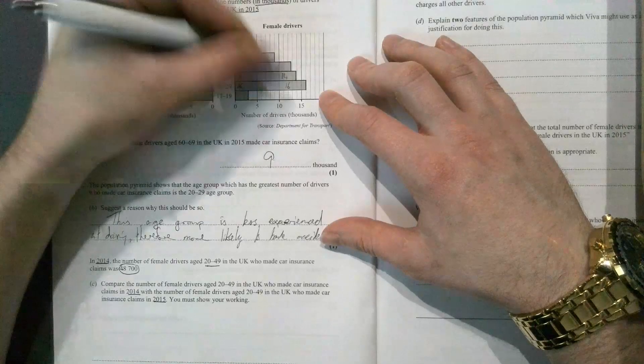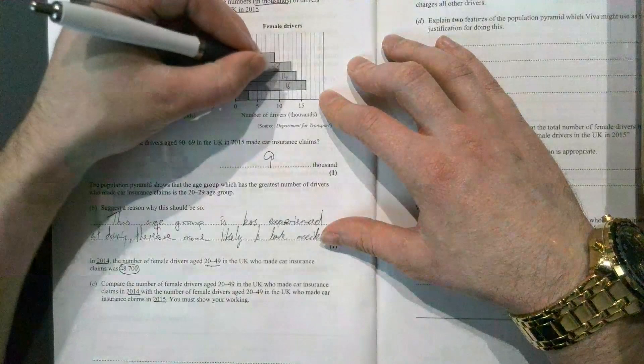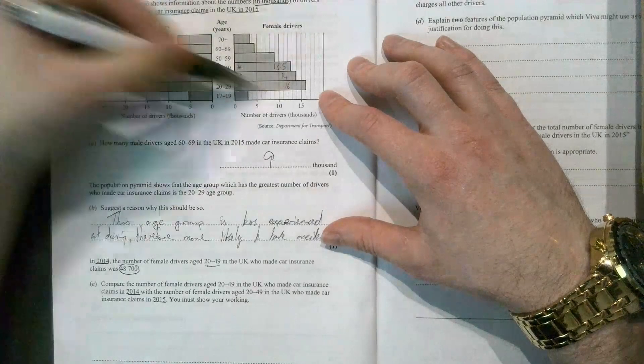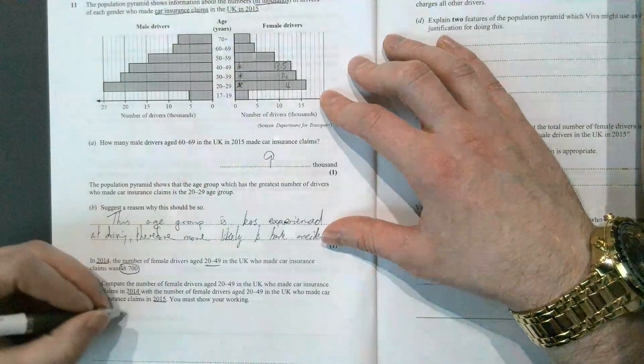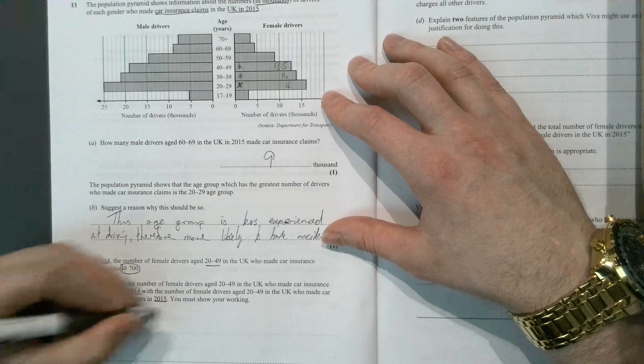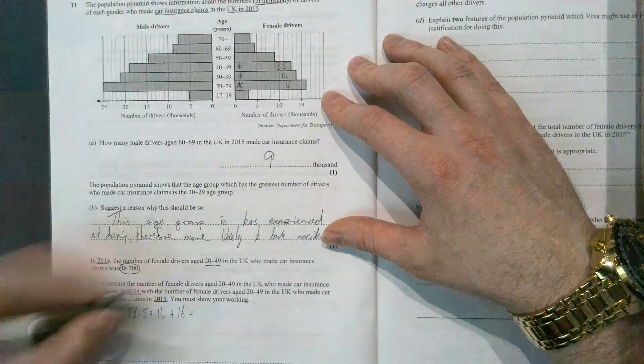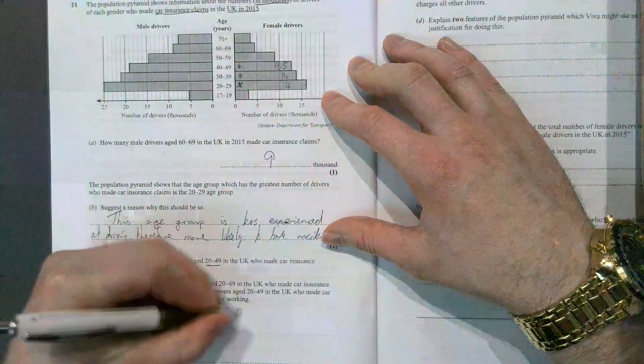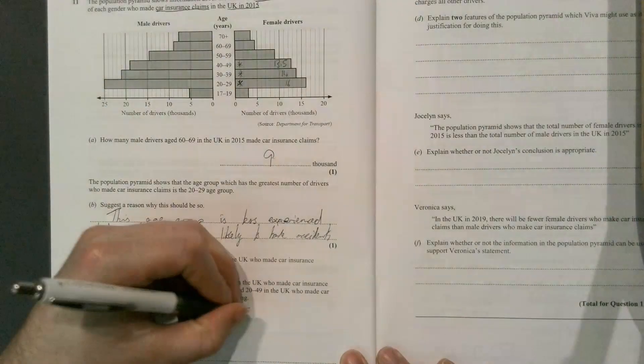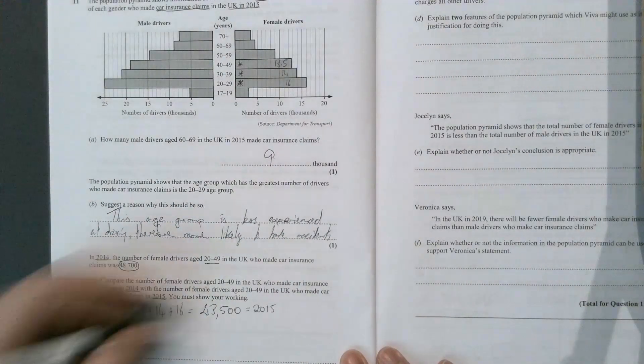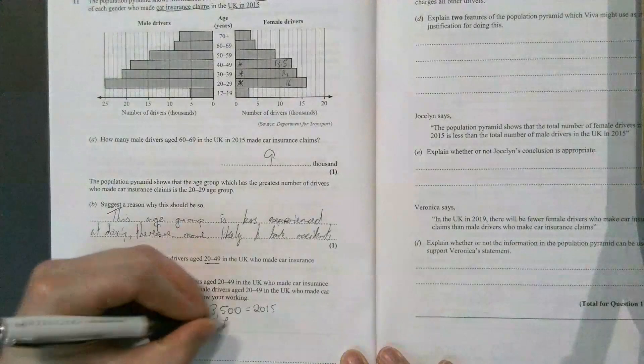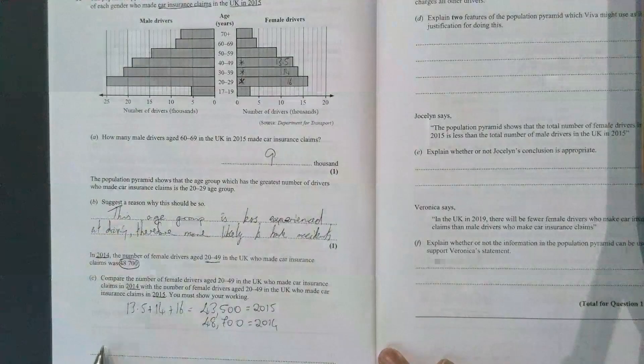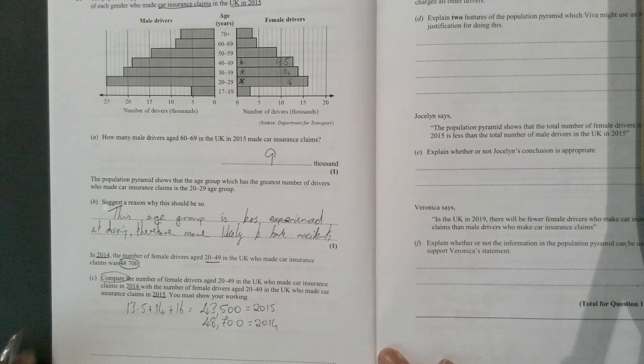And then the next one is 13.5. So what I need to do is add these totals together to see what was the total for this age group, 20 to 49, in 2015. So it is 13.5 plus 14 plus 16, which equals 43.5 thousand. That was 2015. 2014 was 48,700. So what we would conclude then—and it did say compare, so we do need to state something.